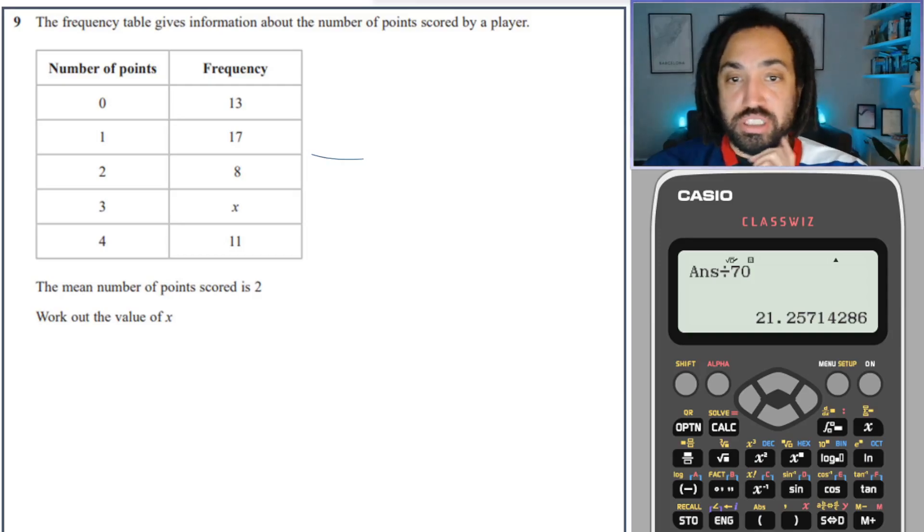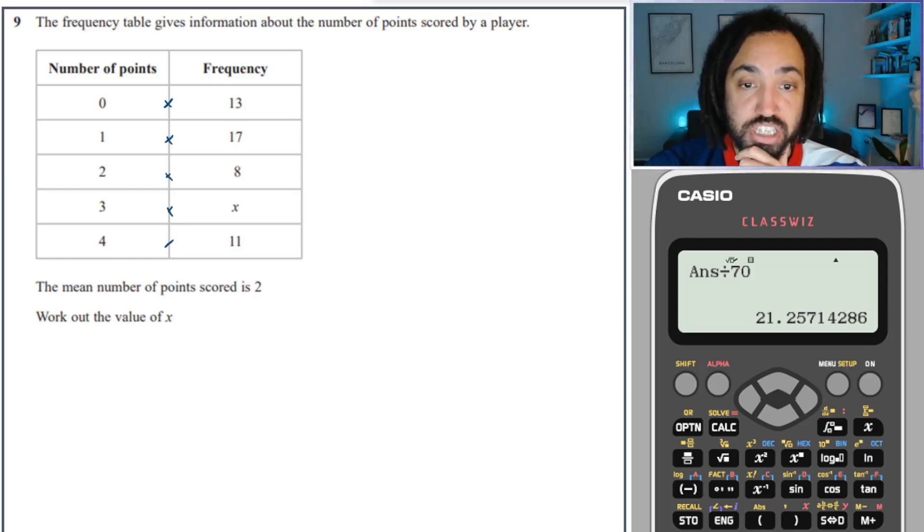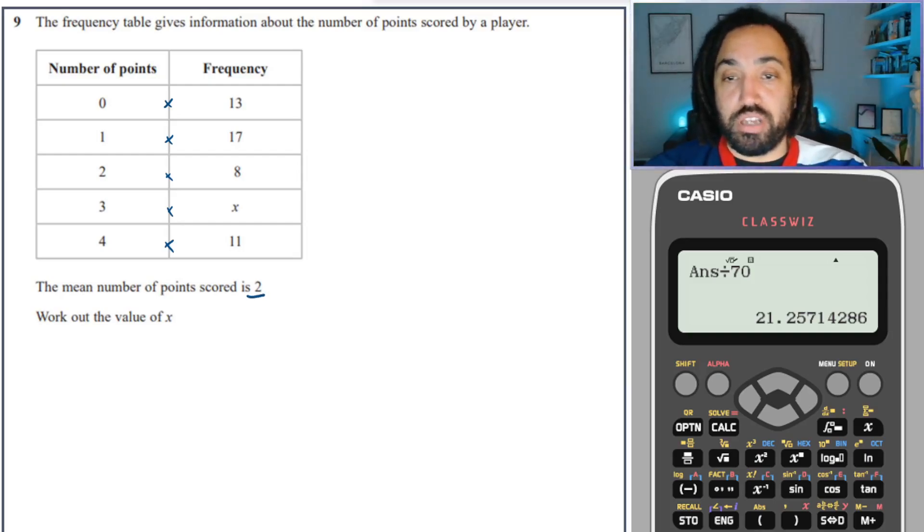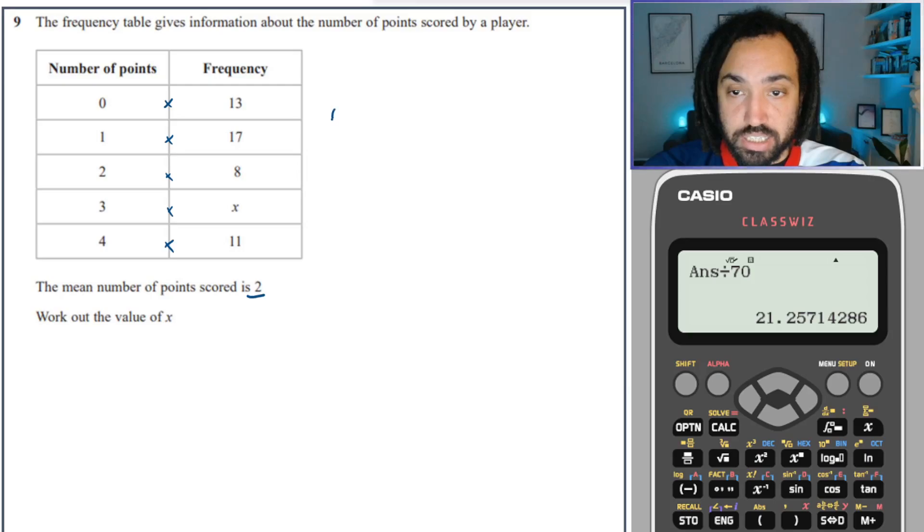Next question is a bit trickier. We don't have a class here, so we're going to use the exact value of number of points. We're going to multiply the exact number of points by how many times they achieved those particular number of points. This is going to give us the total number of points, and then if we divide by the total frequency we will get the mean, which is 2. My equation should look something like this.